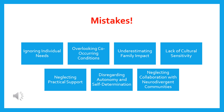Another common mistake in my personal professional experience is disregarding autonomy and self-determination. It's really important to involve neurodivergent individuals in the decision-making process and honor their autonomy and self-determination. We should avoid assuming what is best for them without their input and actively involve them in therapy goals, treatment plans, and choices related to their own lives. I've seen this a few times with supervisees, and it led to interesting conversations about their biases and how they show up in sessions with those clients.